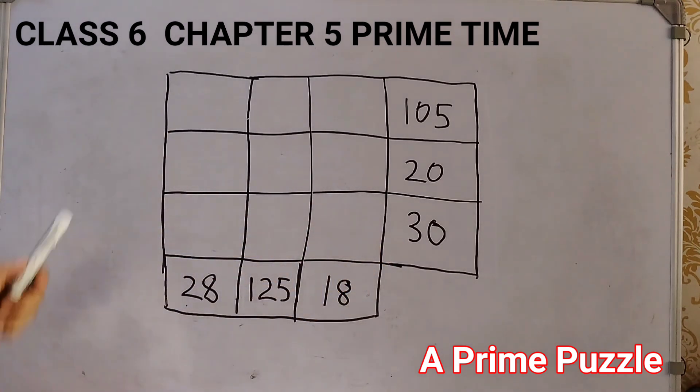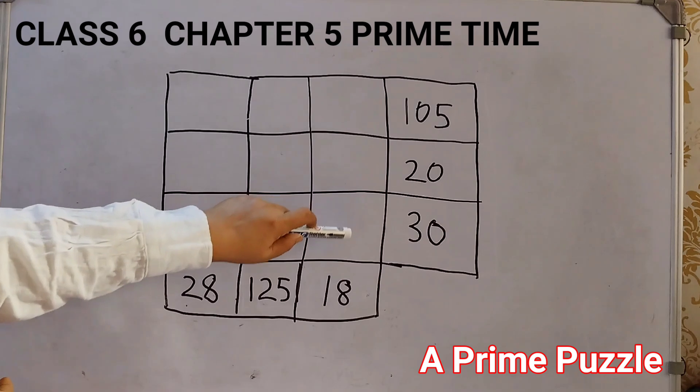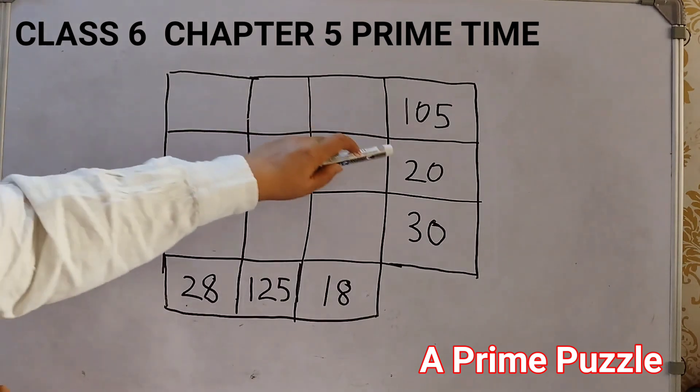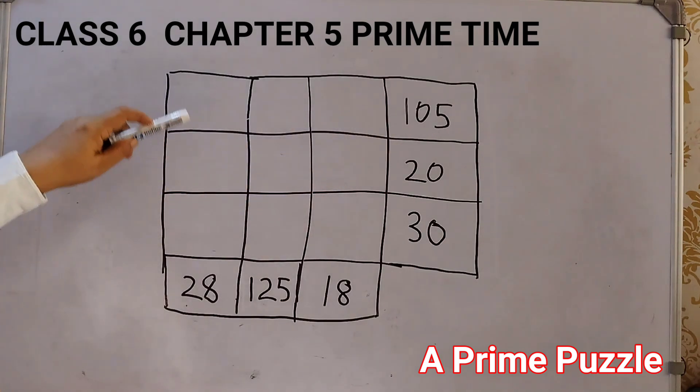And same thing with the column. We multiply these 3 numbers, which we are going to fill up, we should get 28. These 3, 125. These 3, 18. So, that is the rule. First rule, all should be prime numbers. Second, the product of each row is the number to the right. And the product of each column is the number below the column.